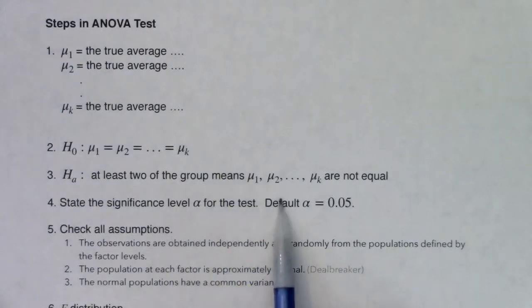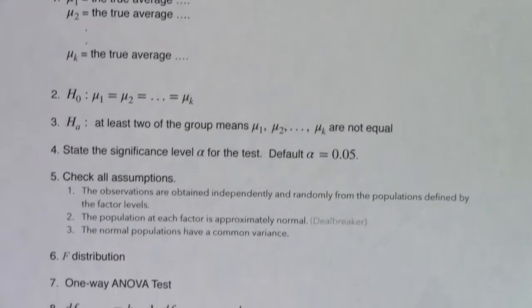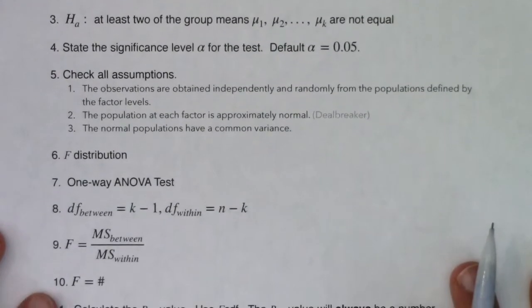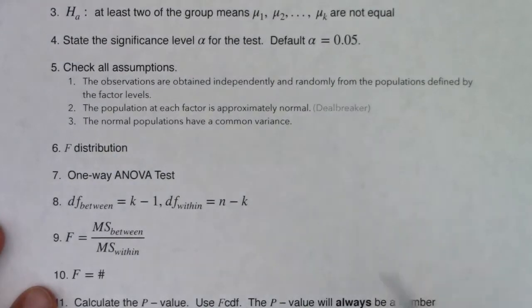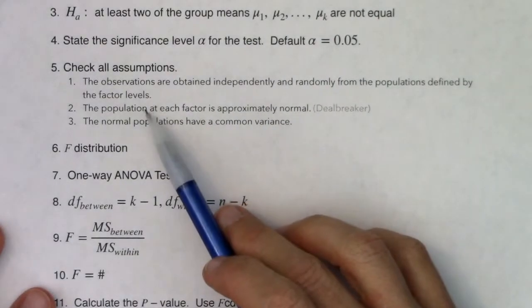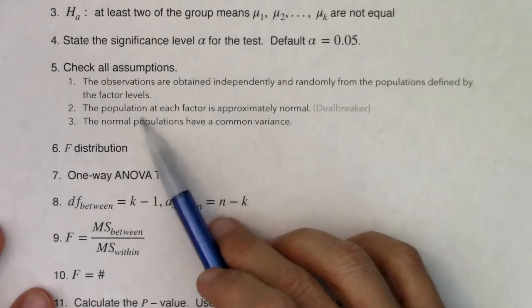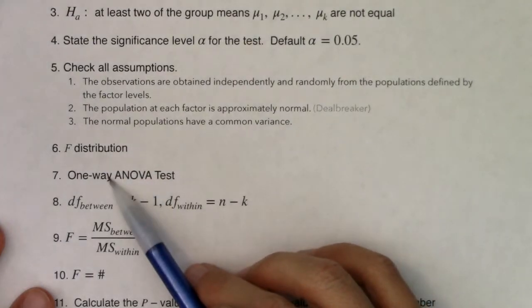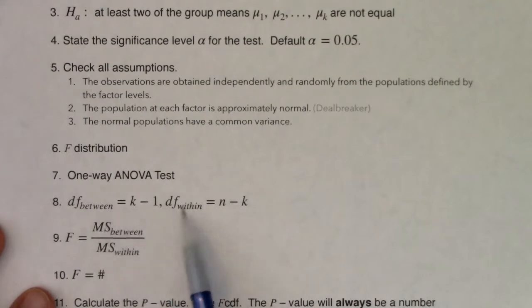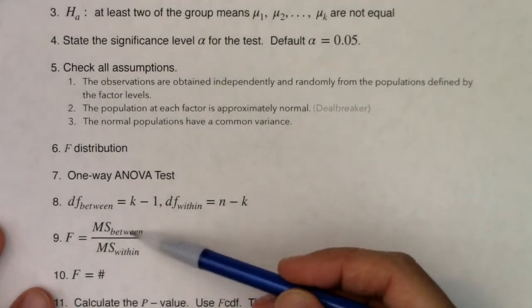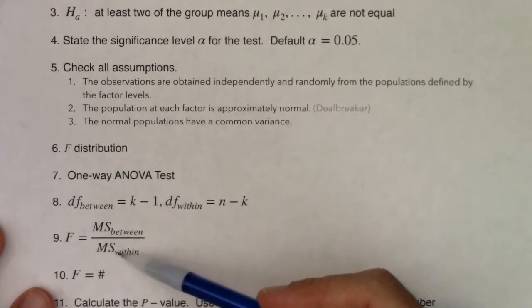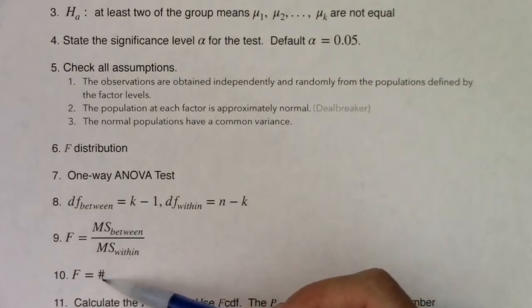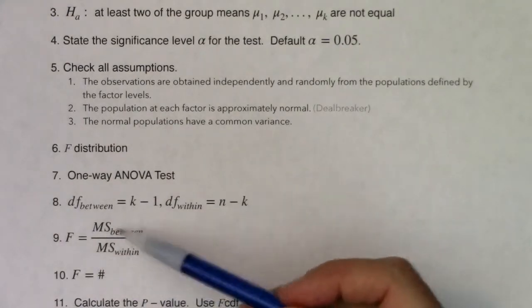You got your alpha level, we'll default to 5%. On free response questions, you don't have to write up your assumptions because that third one can be a little ambiguous in terms of how do we check it. But here are your assumptions when we're dealing with one-way ANOVA. You need your observations obtained independently and randomly from the populations defined by the factor levels. You need normality on each population and you need those populations to have a common variance. You're going to be on the F distribution. We're going to run one-way ANOVA. There are two degrees of freedom formulas - the between and within. And that also plays out in your test statistic. There's the mean squares between and the mean squares within, and that ratio comprises your F test statistic. We're going to get all of these numbers from our calculator.